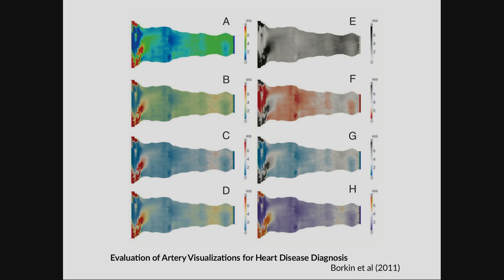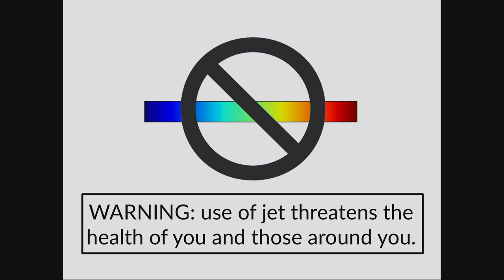They compared Jet to more rationally designed color maps. When asked which color map works best, doctors said they preferred Jet — they practiced with it, it's colorful, they like it. But if you actually look at their performance, when using Jet they're about twice as slow and make more diagnostic errors. Defaults matter. It may have killed people.